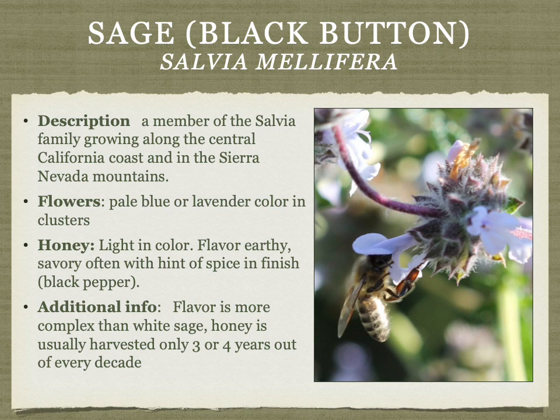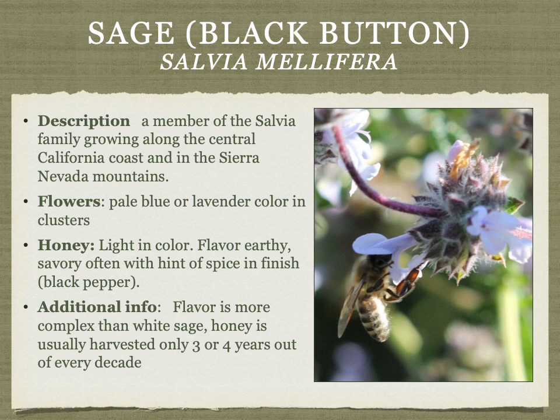Black sage (Salvia mellifera) grows along the central California coast and into the Sierra Nevada mountains. It doesn't produce honey every year — conditions of rainfall need to be just right, occurring maybe three or four years out of every decade. The flavor is more complex than the more common white sage honey — light in color but earthy, savory, often with a hint of spice like black pepper. The name Salvia mellifera literally means 'honey-producing,' which reflects what a wonderful honey plant it can be.